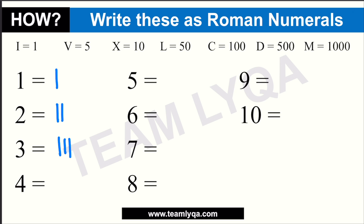So for 4, we write it as IV. V is 5, and the idea is: if the symbol that comes first is smaller than the one that follows, you subtract it. So this is basically 5 minus 1, which equals 4. Then 5 is just V. 6 is VI. The difference between IV and VI is the position. When a smaller symbol follows a larger one, you add them. So VI is 5 plus 1, or 6.